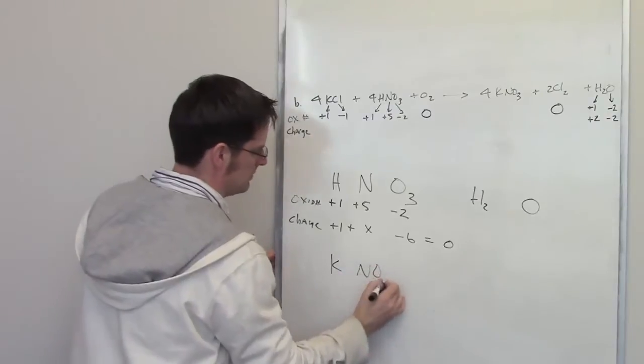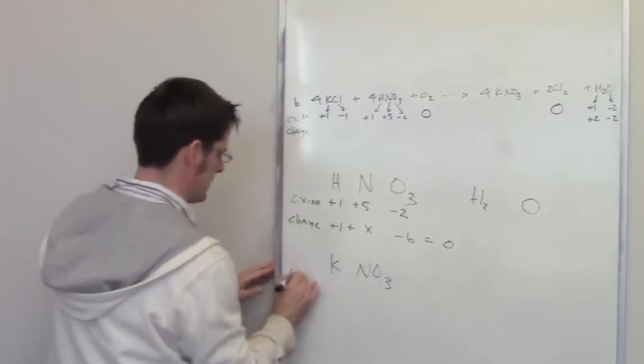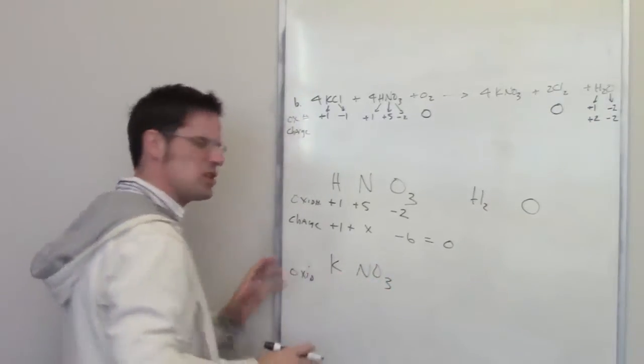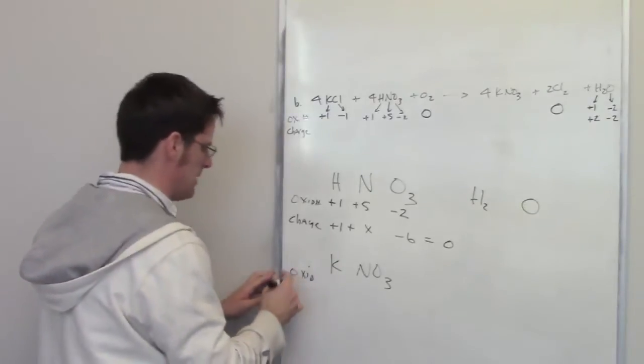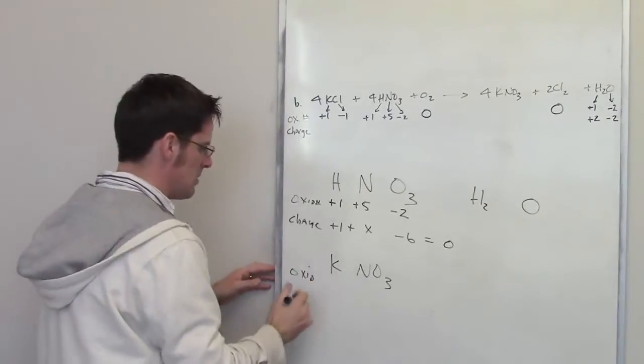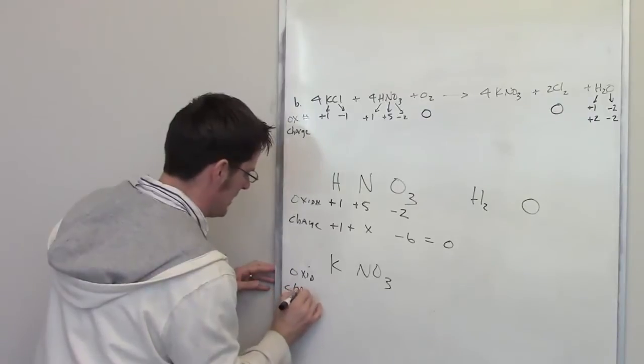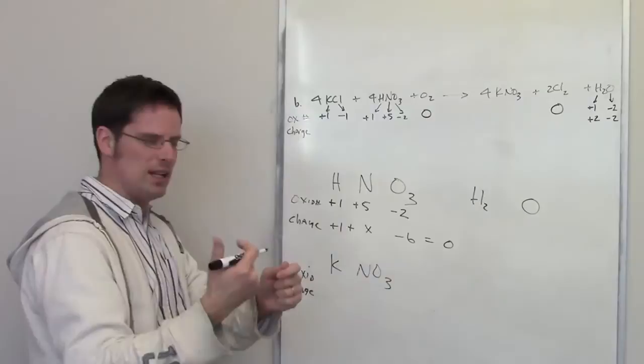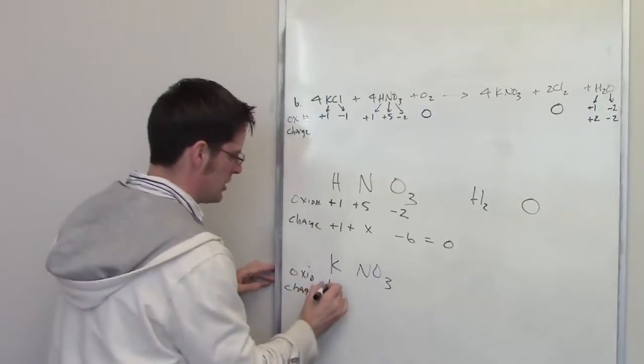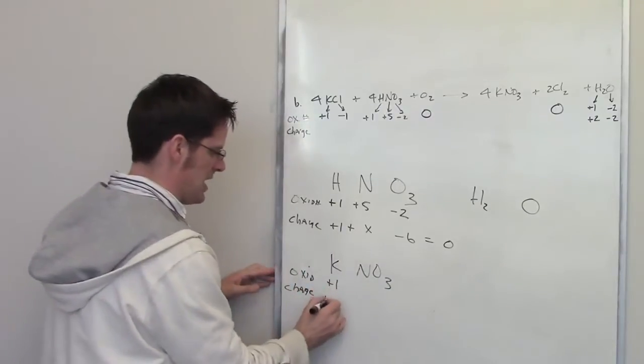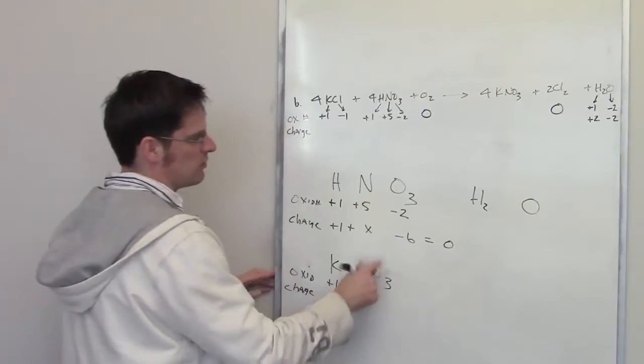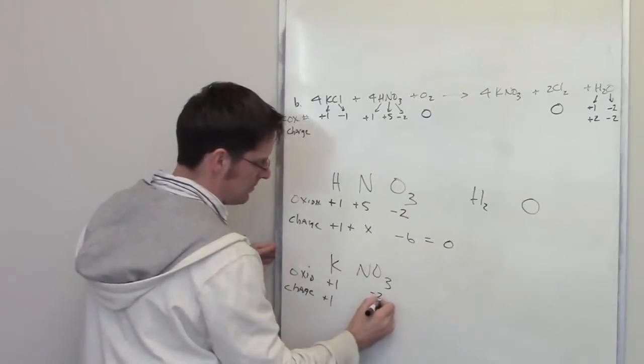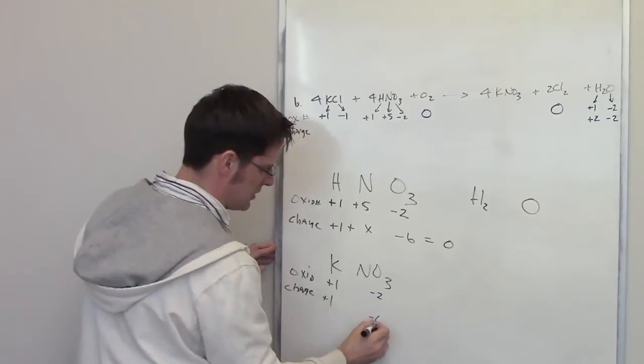KNO3 might be similar. It might not, though. The oxidation number for potassium, and this is usually the case for most metals, except for metals that are in the D block, is going to be corresponding to whatever column it is in the periodic table. Potassium's in column one, which means it wants to lose one electron to have a plus one charge, and hence a plus one oxidation number. Oxygen, for reasons we talked about up here, has an oxidation number of negative two. There are three of them, so it's going to be negative six.